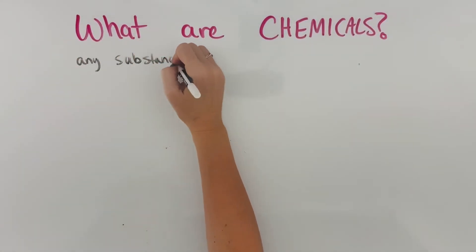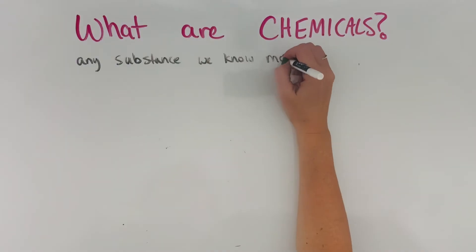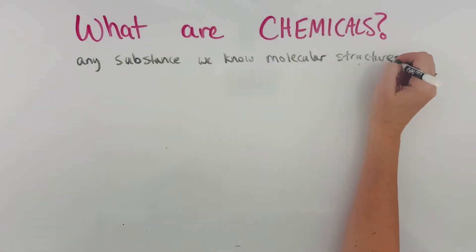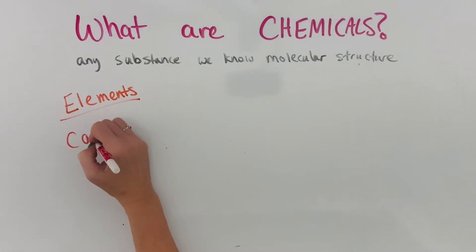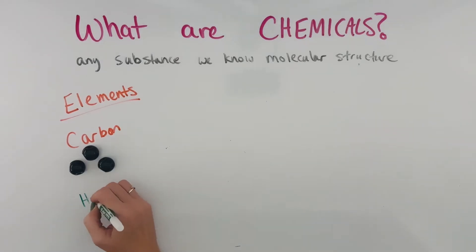Let's make sure we start out by understanding what chemicals are, which are any substance that we know the molecular structure of. All 118 elements on the periodic table are considered chemicals by scientists, like carbon is made of all carbon atoms, or hydrogen is made of all hydrogen atoms. These are chemicals.